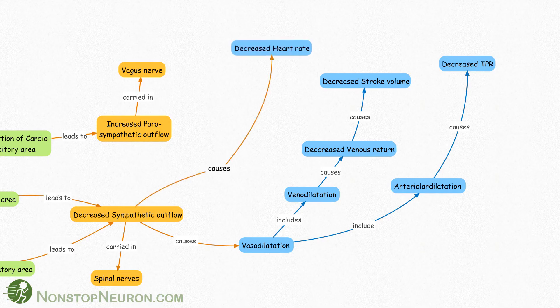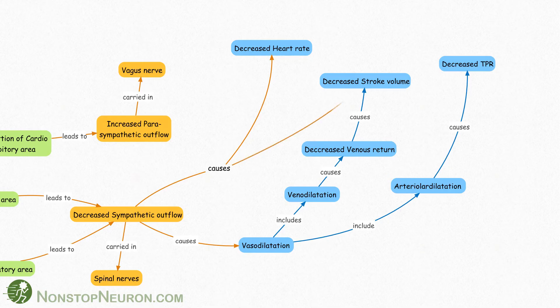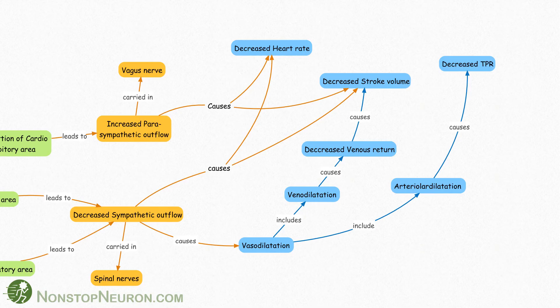Decreased sympathetic stimulation to heart decreases heart rate and stroke volume. Increased parasympathetic stimulation also produces same effect on heart. Due to decreased heart rate and stroke volume, there will be decreased cardiac output.